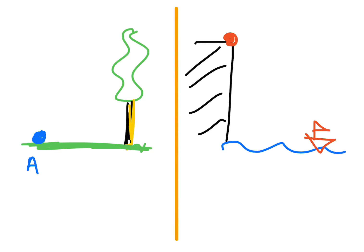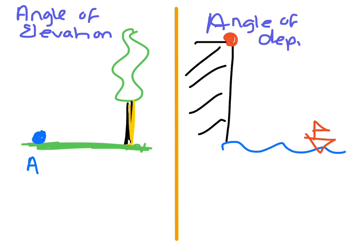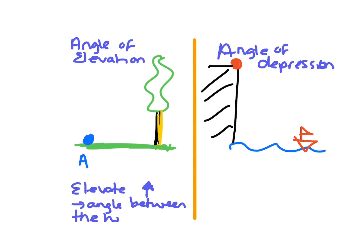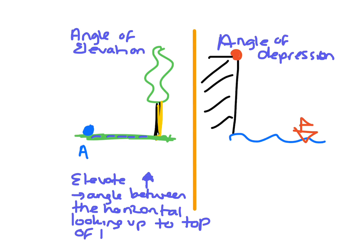I'm going to define angle of elevation and angle of depression. The word elevate means going up. So the angle of elevation is the angle between the horizontal — here the horizontal is the ground level — and looking up to the top of the tree. We call that the line of sight.